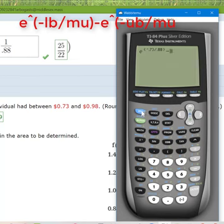Minus. And then I'm going to do it again. Second, e, parentheses, negative. Now my upper bound is 0.98, divided by 0.88. And I hit enter.